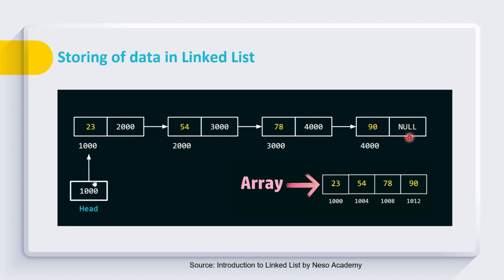The last node is considered as the tail node, and its address part carries null because there is no next node after the tail node. So this is the way data is stored in a linked list, while in case of array the data is simply stored in contiguous memory locations as a sequential list.